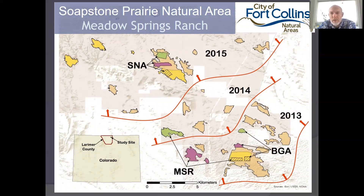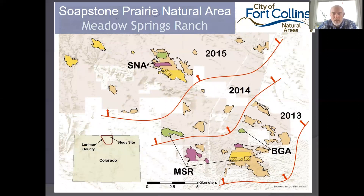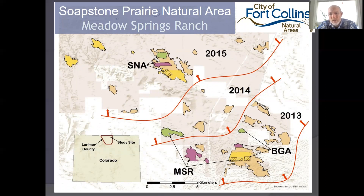Our black-tailed prairie dog replicate was done on City of Fort Collins property near the Wyoming state line at the Soapstone Prairie Natural Area. We were fortunate to have a lot of plague in the landscape when we conducted this study — all colonies between the red lines on the map were impacted by plague. From 2013 to 2015 plague moved northward, and all colonies on this complex that didn't receive plague management were essentially wiped out. The purple areas are vaccine plots, green are placebo plots, and yellow received the dusting treatment.